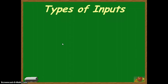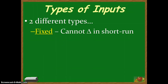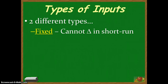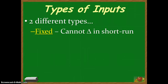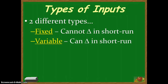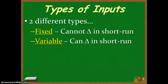When we talk about inputs, there are a couple of different types you need to keep in mind. One is called a fixed input, which means it cannot be changed in the short run — I cannot change it in the immediate future. In the long run, in the faraway future, I can make that change. A variable input is one that I can change right now. So you have two different types of inputs: fixed and variable.